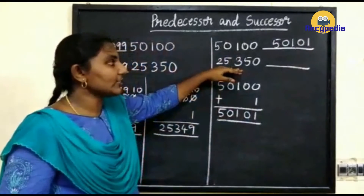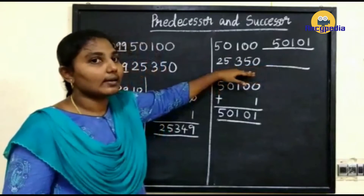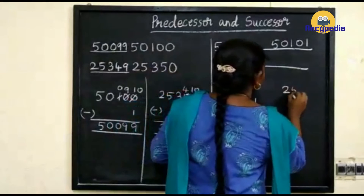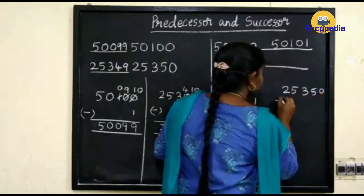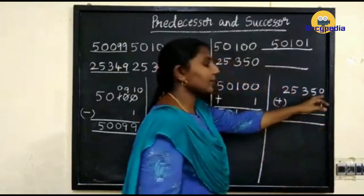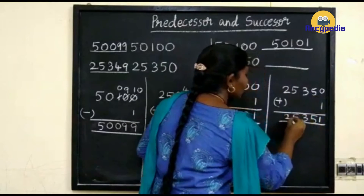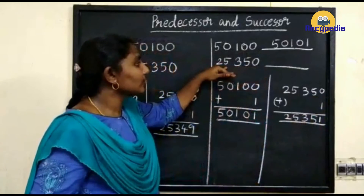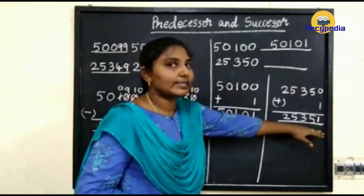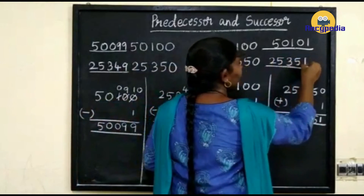Next, the number is 25,350. You have to find out the successor of this number, so you have to add 1 to the number. 0 plus 1 is 1. Then 5, 3, 5, 2. What is the successor of 25,350? The answer is 25,351, so write 25,351.